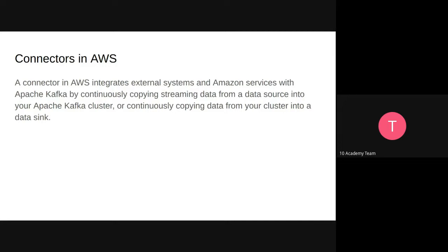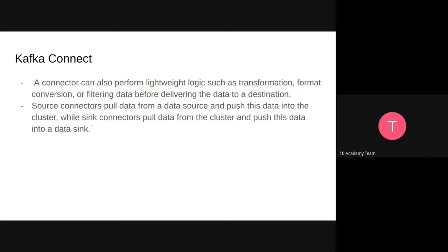There are two types of connectors in Apache Kafka on AWS. The first is the source connector, which pulls data from different sources and produces it into Kafka. The second is the sink connector, which consumes data from Kafka in real time and loads it into a database, data warehouse, or preferred destination. A connector can also perform lightweight logic such as transformation, format conversion, or filtering data before delivering it to a destination.